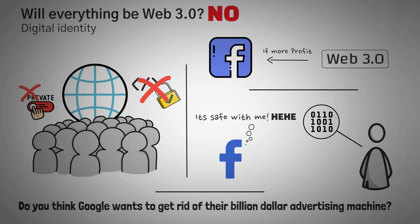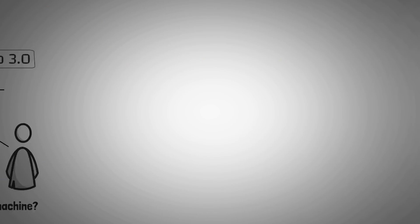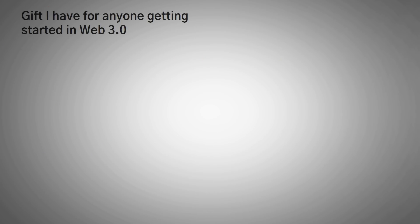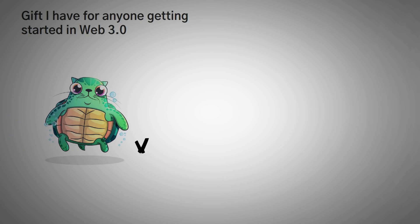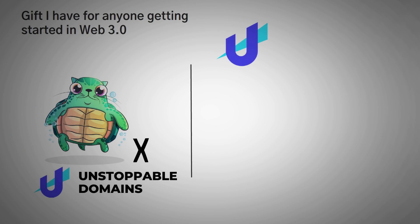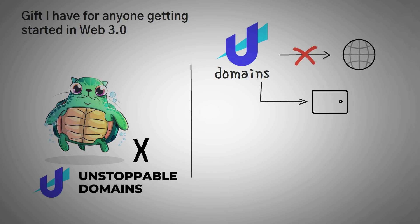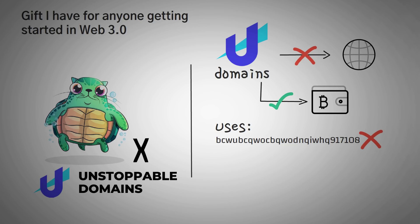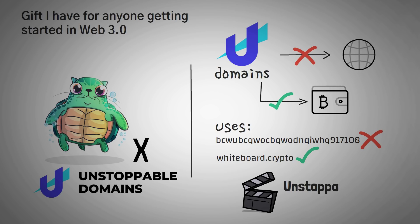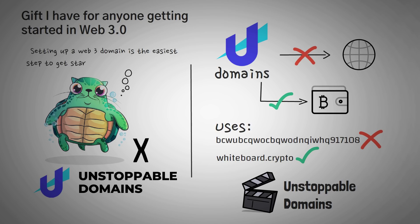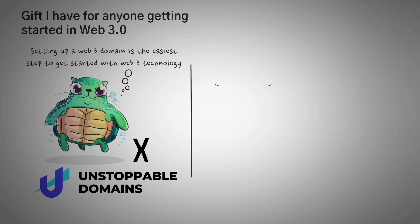Now that we're halfway through this video, I wanted to share a gift for anyone getting started in Web3.0. Unstoppable Domains is a project that's aiming to create domain addresses for your crypto wallets. Instead of a long address with numbers and letters, you can just say, 'Send me $10 to whiteboard.crypto,' and behind the scenes it'll redirect that money into your wallet. I think getting and setting up a Web3.0 domain is the easiest step to get started with Web3.0 technology.